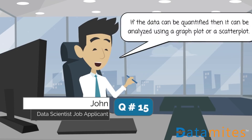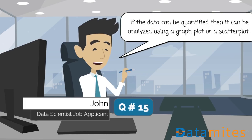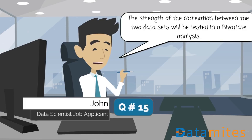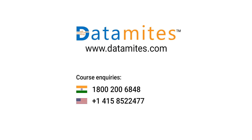If the data can be quantified, it can be analyzed using a graph plot or a scatterplot. The strength of the correlation between the two datasets will be tested in a bivariate analysis. This is a complex analysis.